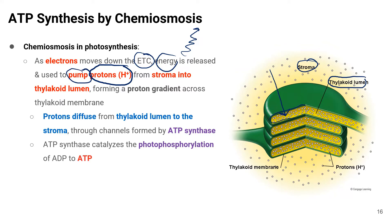Because the word 'pump' is used here, this indicates active transport — meaning the movement of protons is from lower to higher concentration gradient, in this case from the stroma into the thylakoid lumen. This creates a proton gradient across the thylakoid membrane, with a high concentration of protons inside the thylakoid lumen.